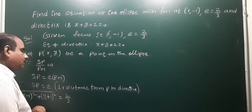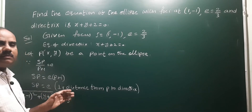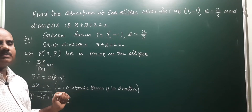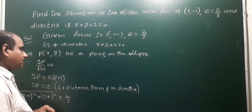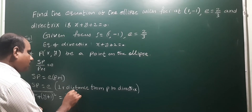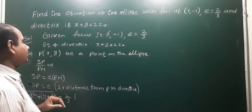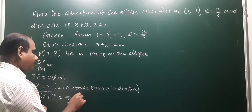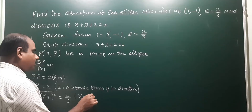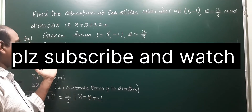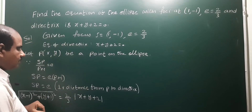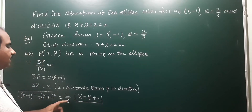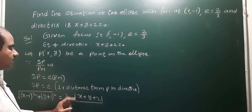The perpendicular distance formula is |ax₁ + by₁ + c| / √(a² + b²). Substituting P(x, y) into the directrix x + y + 2 = 0, we get PM = |x + y + 2| / √(1² + 1²).